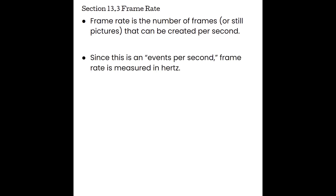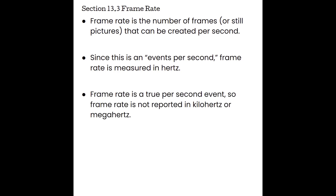Frame rate is one of those true per-second events, so frame rate is not reported in kilohertz or megahertz — it is just hertz. We can only produce so many frames per second. With a higher frame rate, the more movie-like our images are going to be displayed. The 10 fps was laggy, 30 was pretty good, and 60 was even a little better. As we increase our frames per second or frame rate, we see improved temporal resolution more like a movie.